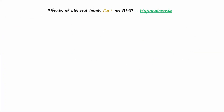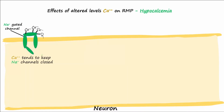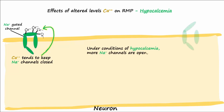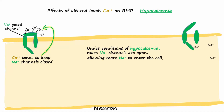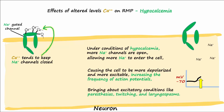Altered calcium levels in the blood can also affect the resting membrane potential. Calcium tends to keep sodium channels closed. Under conditions of hypocalcemia, more sodium channels are open, allowing more sodium to enter the cell, causing the cell to be more depolarized and more excitable, increasing the frequency of action potentials, and bringing about excitatory conditions like paresthesias, twitching, and laryngospasms.